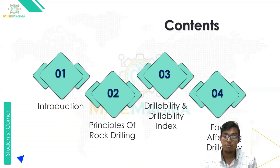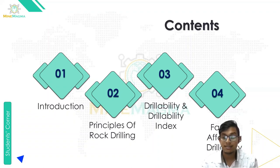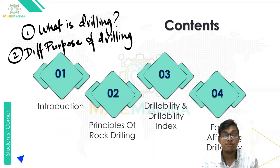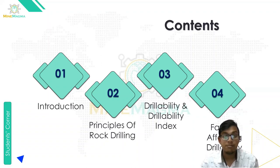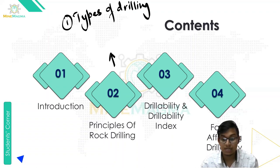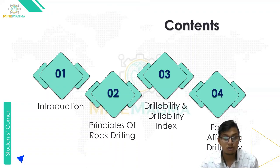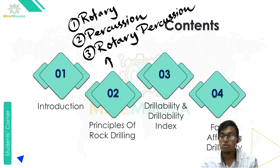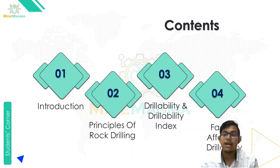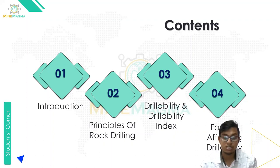In this video we are going to cover it in four parts. First is the introduction part, second is principle of rock drilling, third is drillability and drillability index, and fourth is factors affecting drillability. In the introduction part we will cover what is drilling and the different purposes of drilling in surface mining. In part two we will cover types of drilling like rotary drilling, hammer drilling, and DTH (down the hole) drilling, the principle of rock drilling, blast hole characteristics, and rotary percussion drilling. In part three, drillability and drillability index, and in part four, factors affecting drillability including geomechanical parameters and machine parameters.